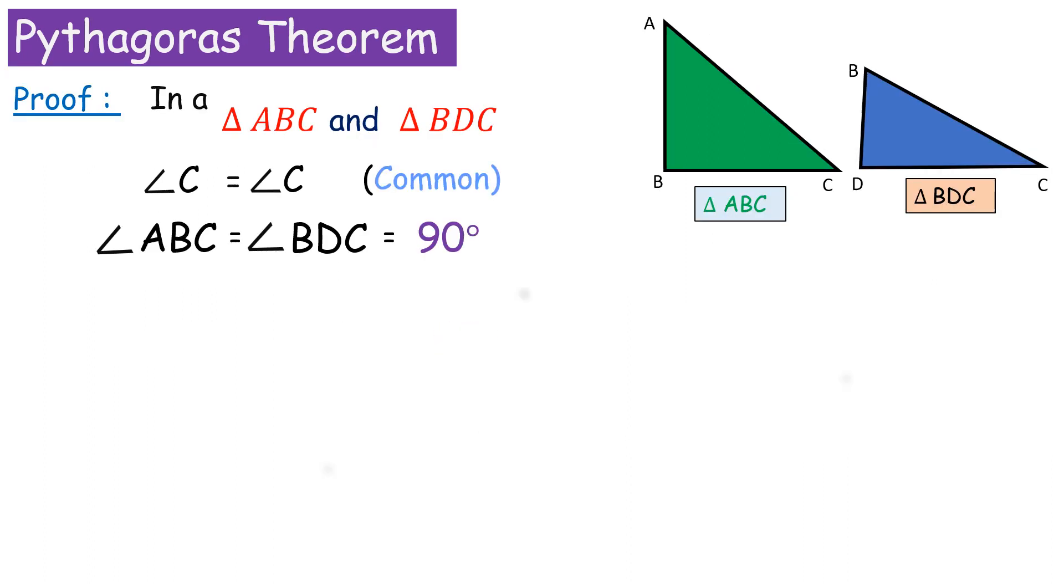By angle-angle similarity, if two angles of one triangle are congruent to angles of another triangle, then the triangles are similar. Therefore, triangle ABC is similar to triangle BDC.